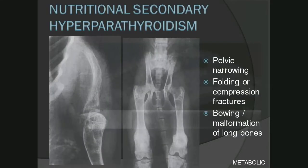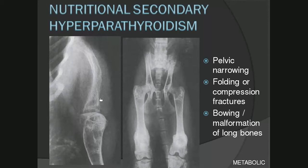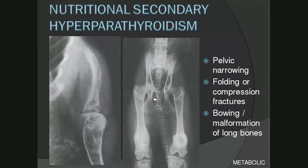Here is an example of a feline patient. The scapula is bowed due to weight bearing on an abnormal bone. The cortices are very thin and the whole bone has an osteopenic or radiolucent appearance. One can also see pelvic narrowing and folding or compression fractures, often in variable stages of healing — some more acute and some more chronic occurring in the same patient. In this cat, there is a lot of mature bridging callus at the distal femurs consistent with chronic fractures.